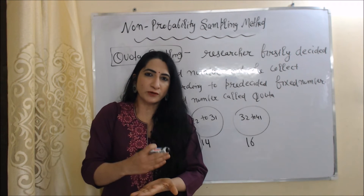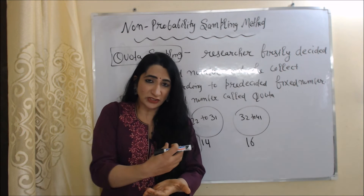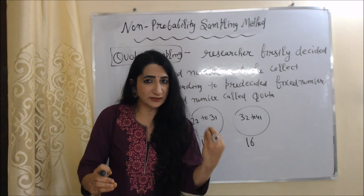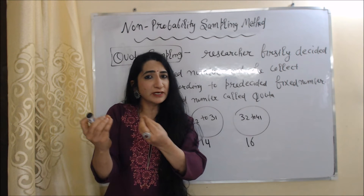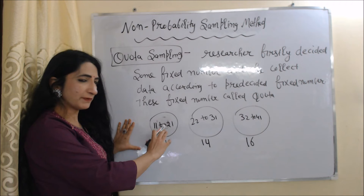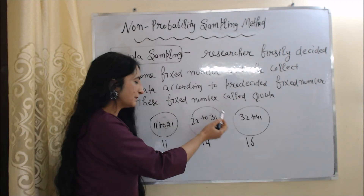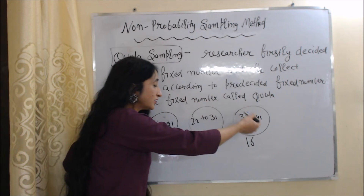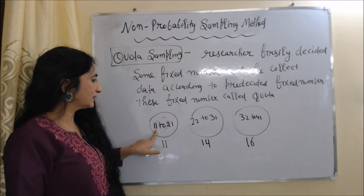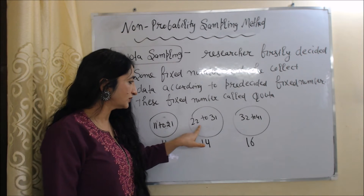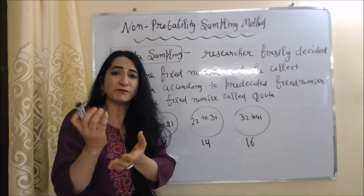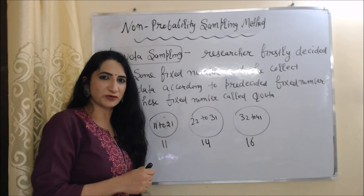Next is quota sampling. In quota sampling, the researcher first decides a fixed number, and according to that pre-decided fixed number — called a quota — he collects samples. For example, the researcher makes groups based on age: group one includes people aged 11 to 21, group two includes ages 22 to 31, and group three includes ages 32 to 41. He needs 11 samples from group one, 14 from group two, and 16 from group three. The researcher pre-decides these numbers and collects data accordingly.